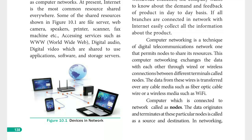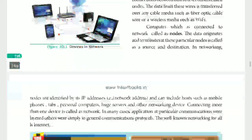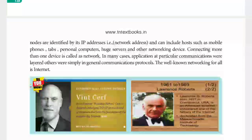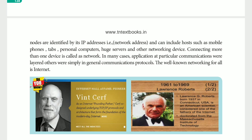A computer network permits nodes to share resources. We exchange data with each other through wire or wireless connections between different terminals called nodes. Data is transferred over cable media such as fiber optic cable, or wireless media such as Wi-Fi. Each node is identified by using an IP address, which is an identification number — like a telephone number or mobile number used to identify your identity on the network.